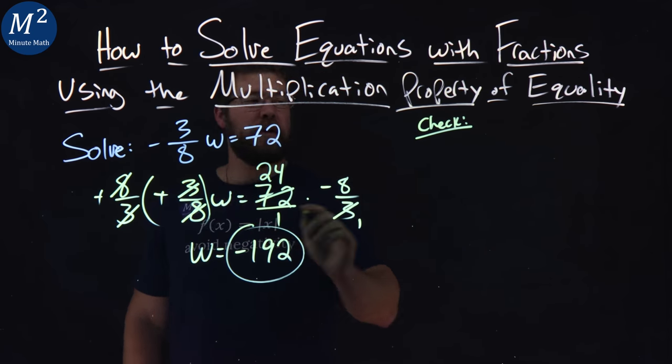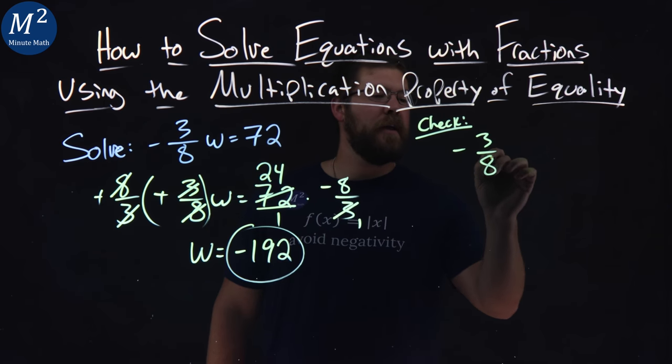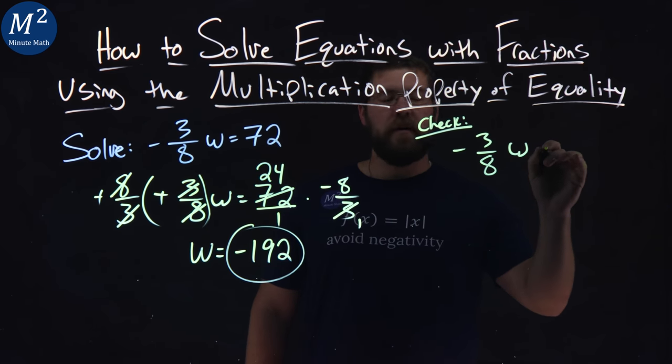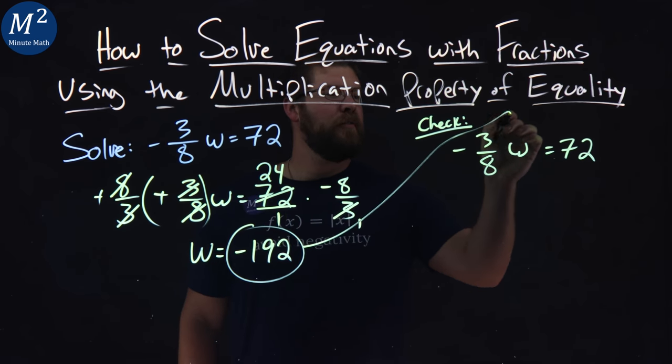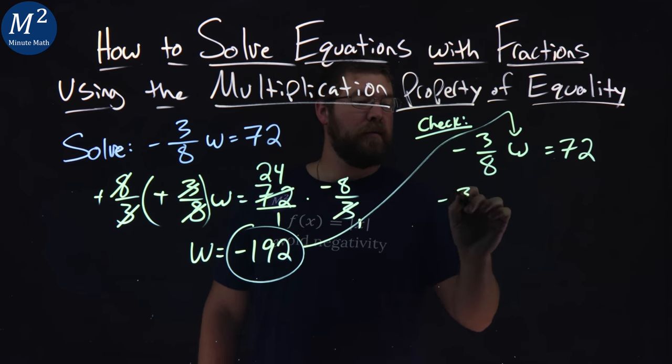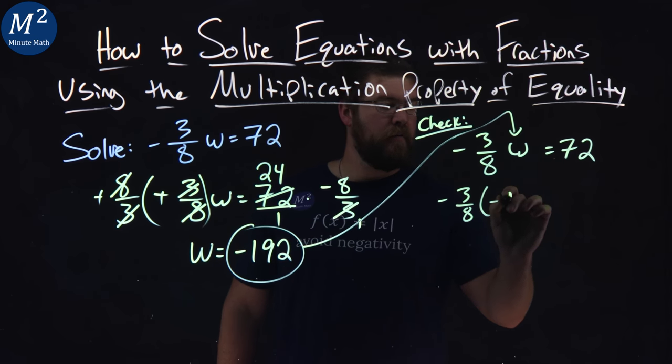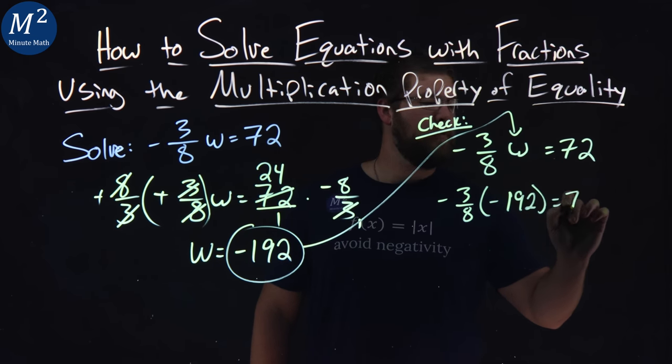To check it, I rewrite my equation, negative 3 over 8w equals 72. I'm going to plug in this negative 192 for w, negative 3 over 8 times a negative 192 equals 72.